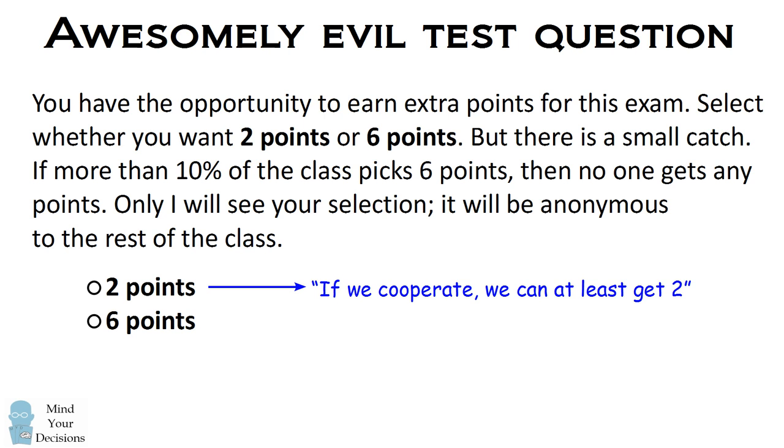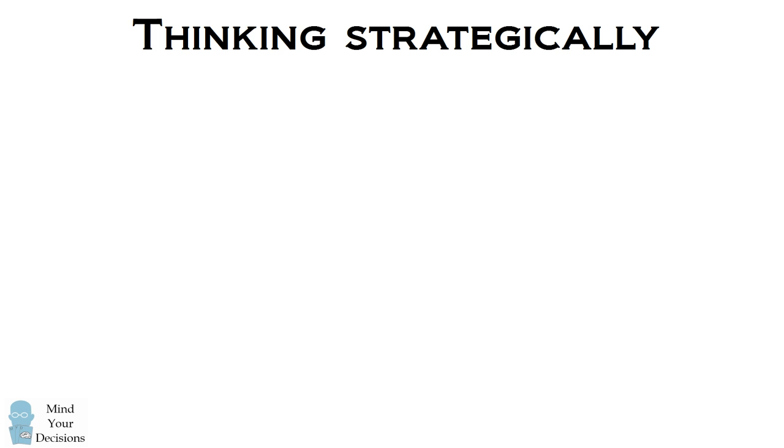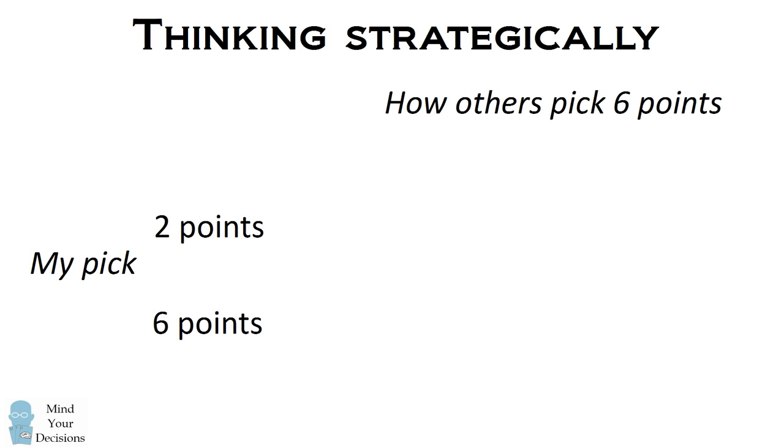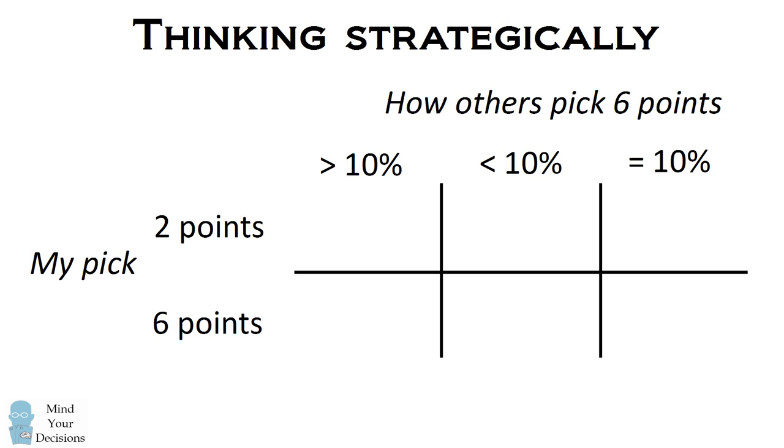But that's not the game theory way to think about this question. Let's analyze what the correct strategic decision should be given the incentives. You want to think about your choice relative to what the other people in the class are doing. The relevant characteristic is how many people are picking 6. It could be more than 10%, fewer than 10%, or exactly 10%.